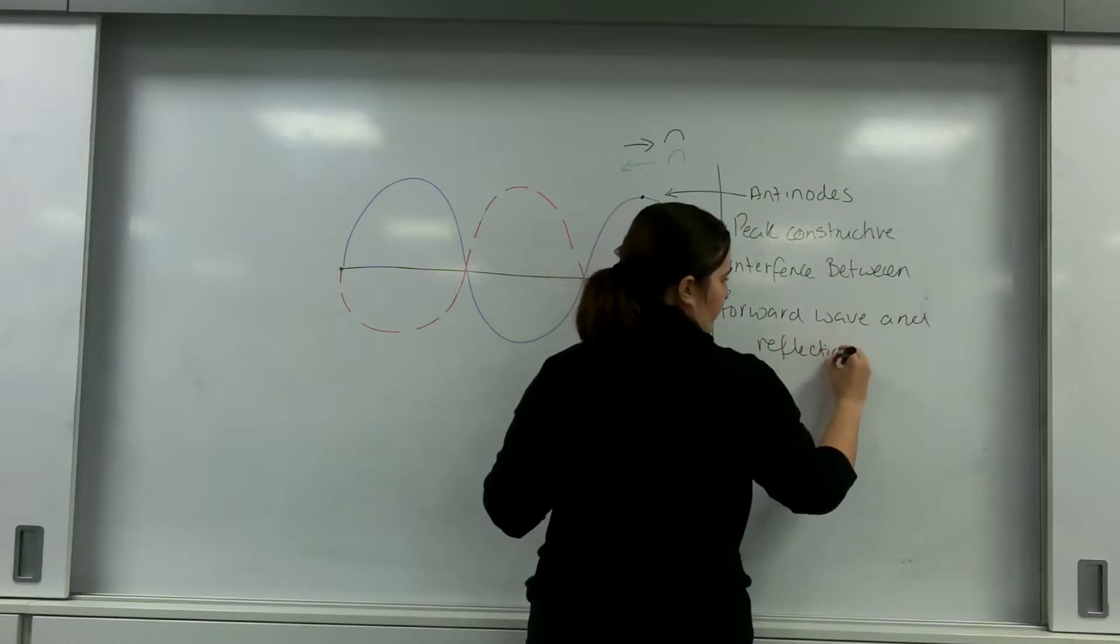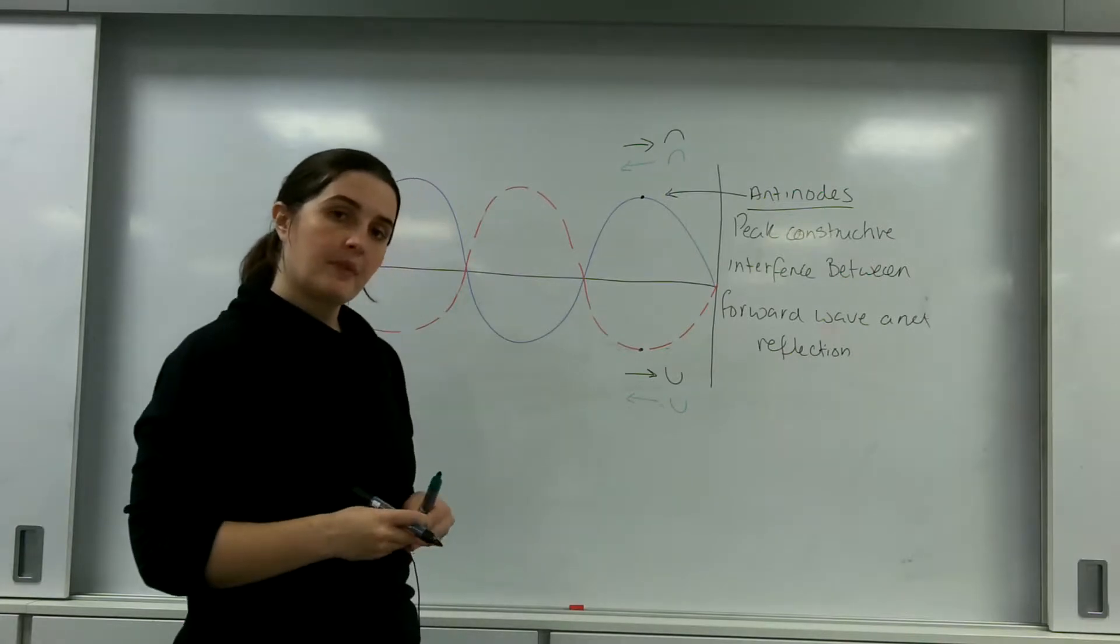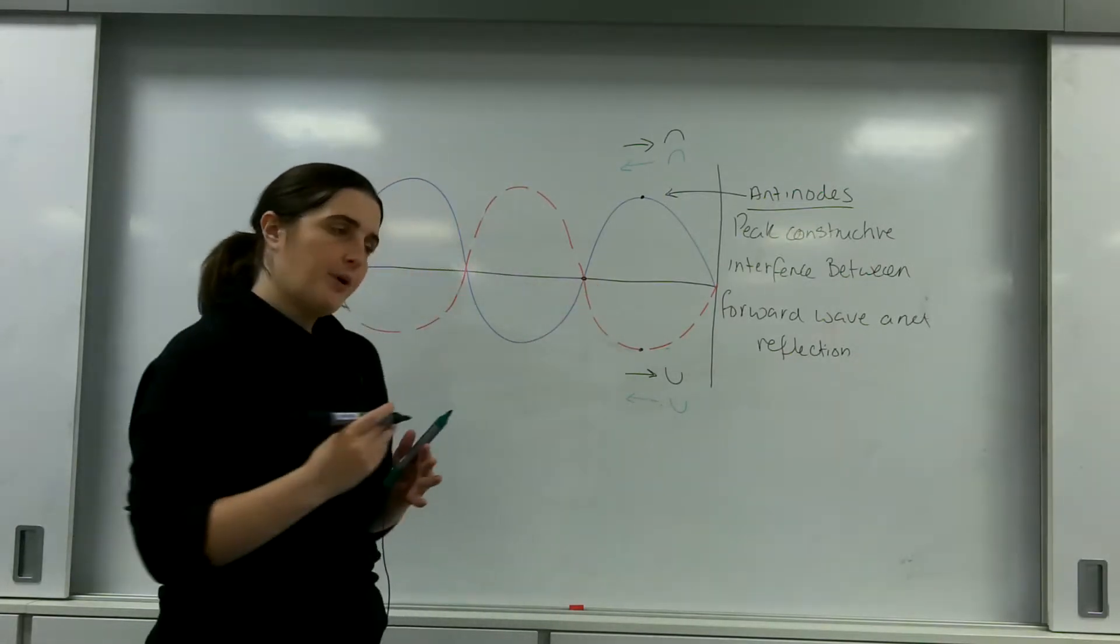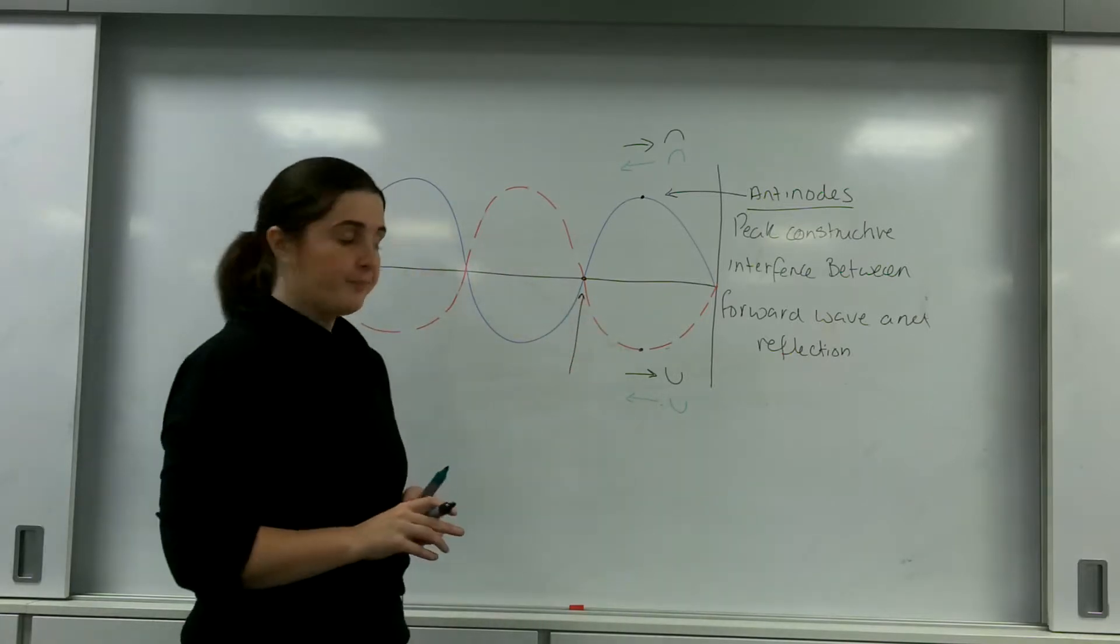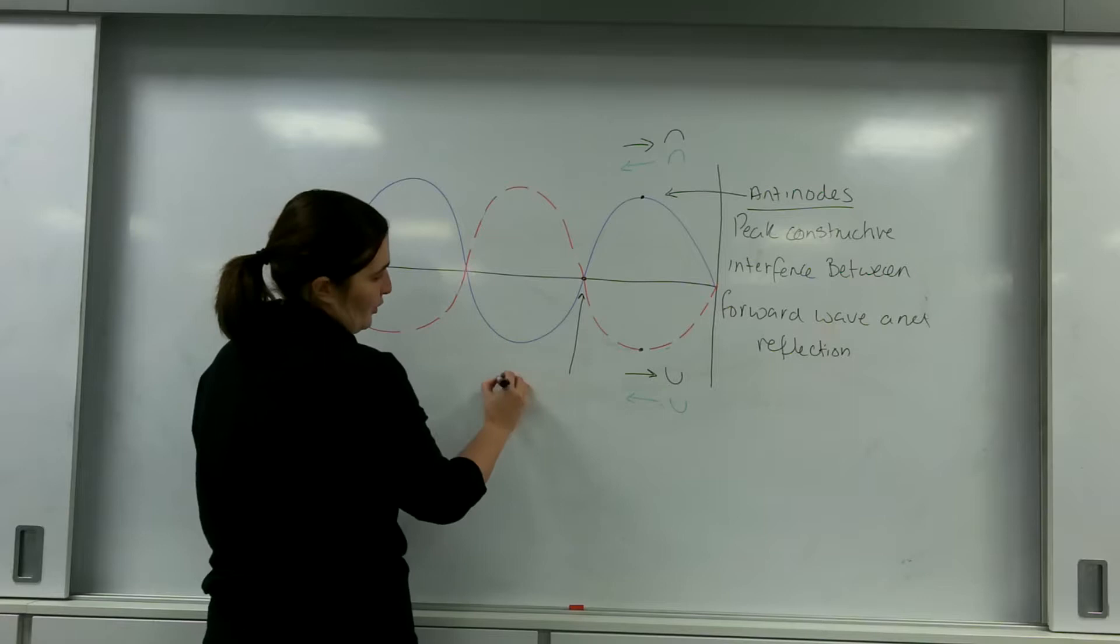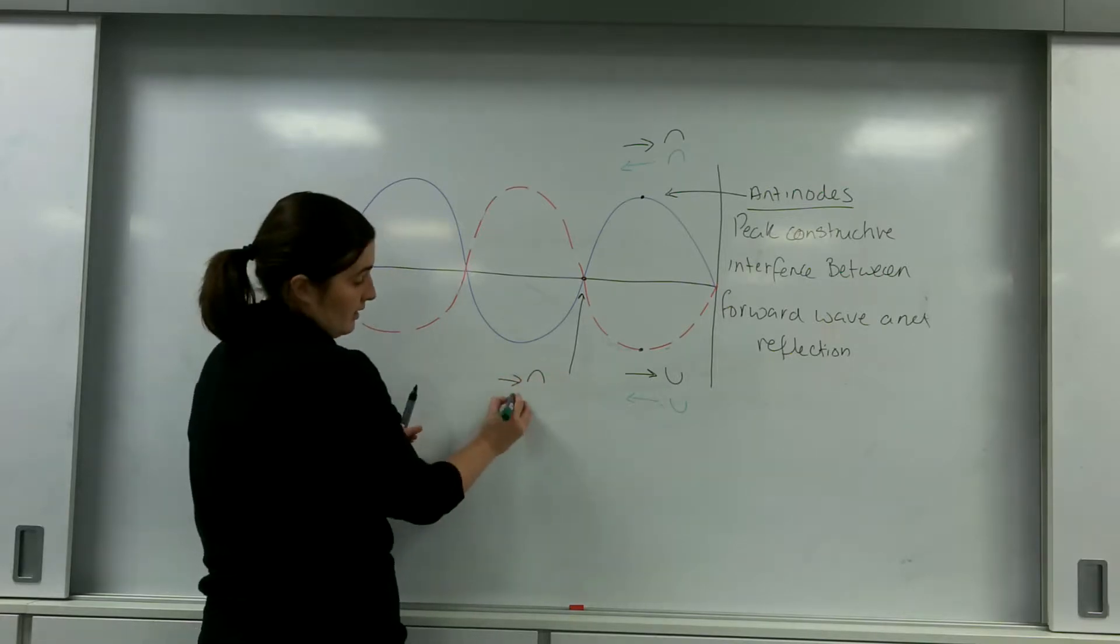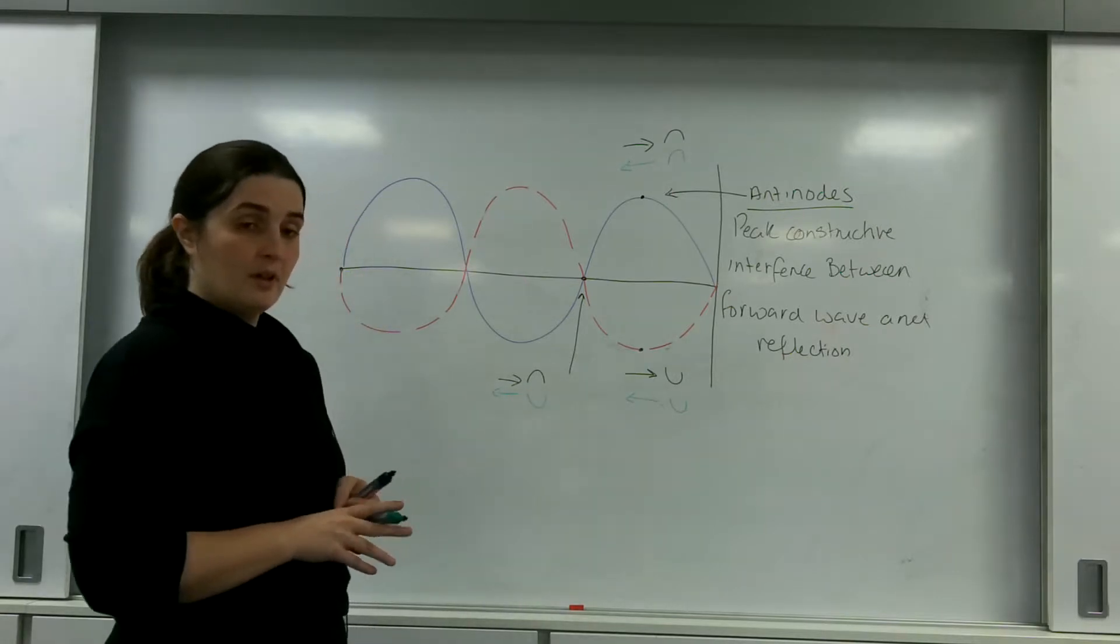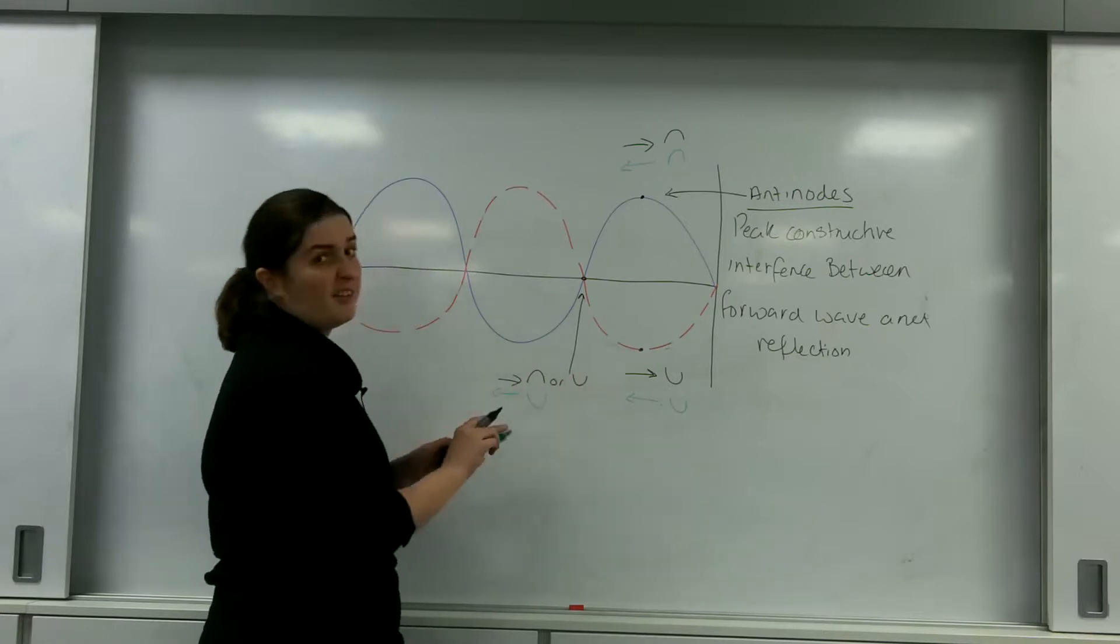This point where the waves, there is nothing, this resultant wave has zero. It's where the forward wave is like that and the backward wave is like that. Or of course, it could be the other way around.